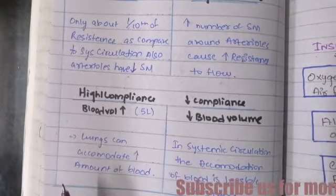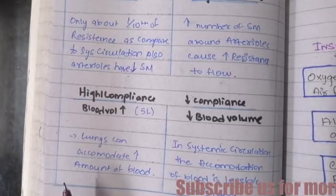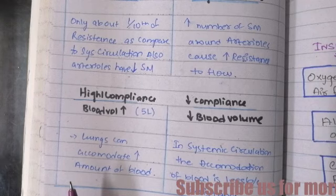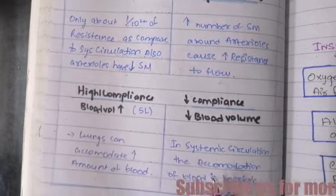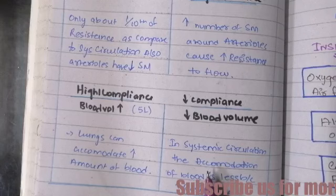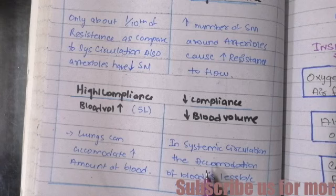In systemic circulation, blood is distributed to the other systems of the body, as discussed in the functional part of the circulatory system. Systemic circulation has different parts including the arterioles, venules, and capillaries. The blood is distributed — about 64 percent in the venules and veins of systemic circulation, and about 7 percent in the arterioles and capillaries. So the blood is distributed across the different parts of systemic circulation, meaning each part has a lower amount of blood.